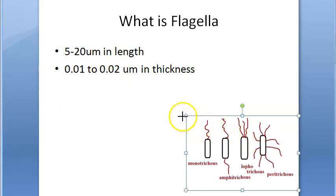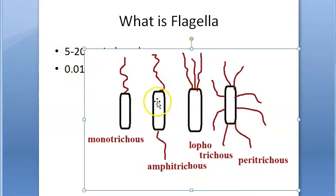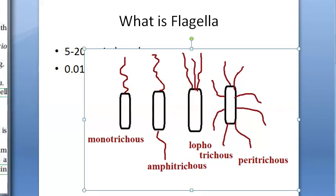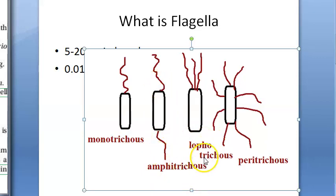Now the arrangement of flagella. There are various patterns of arrangement of flagella with respect to the bacterial surface. You have monotrichous, amphitrichous, lophotrichous, and peritrichous. Mono means only one, amphi means two on both sides, lophotrichous means multiple polar flagella, and peritrichous means flagella distributed all over the entire cell surface.